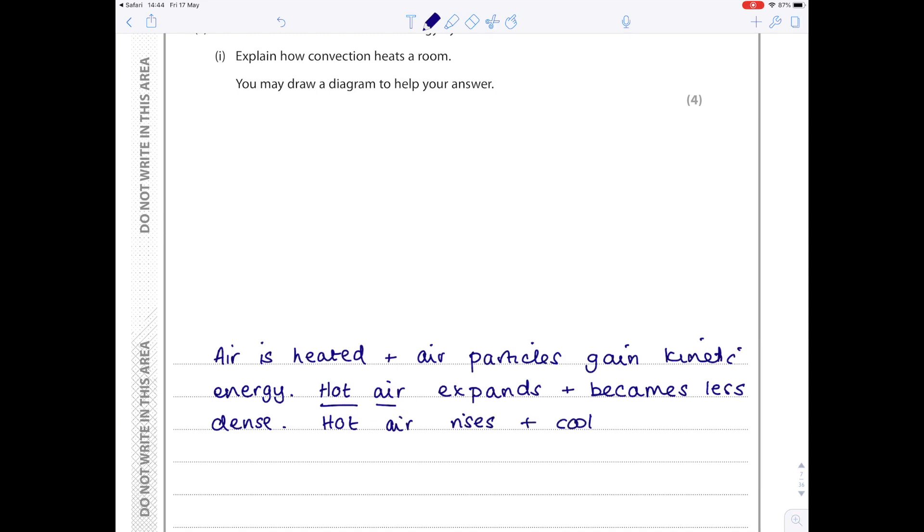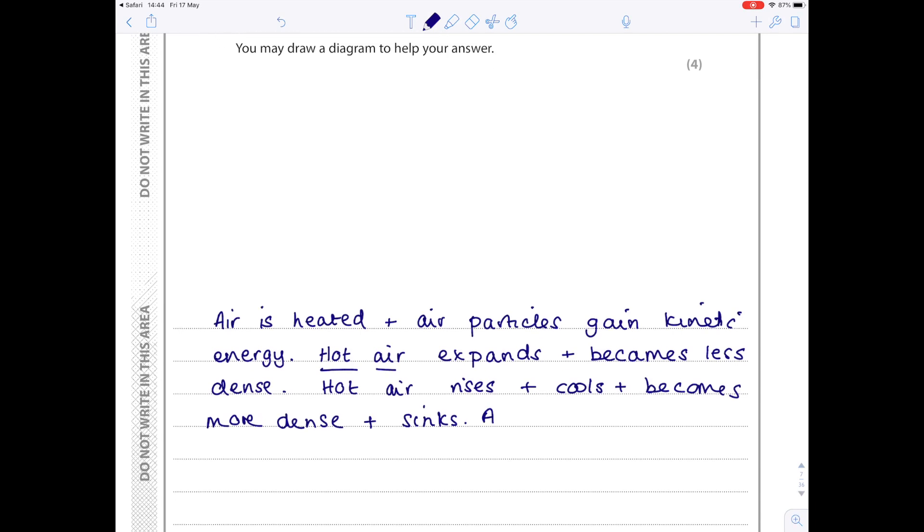Make sure you say that it's the hot air. They're going to be very fussy with the mark schemes here. You have to be very specific that the hot air expands and becomes less dense. The hot air rises and cools and becomes more dense and sinks. A convection current has been set up and the process repeats.